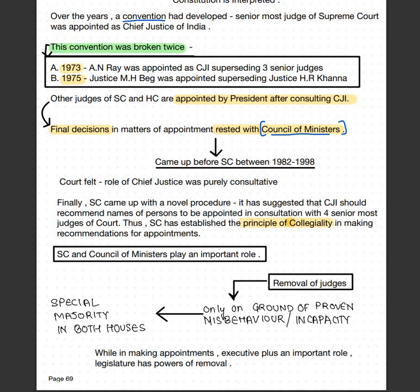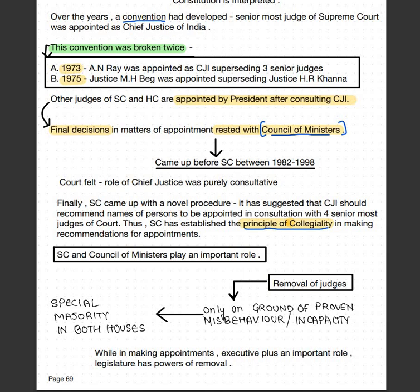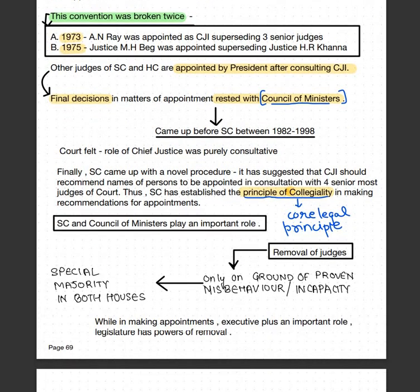The principle of collegiality is the core legal principle underlying the Supreme Court's internal decision-making on appointments. Regarding removal of judges, Supreme Court and High Court judges can be removed only on grounds of incapacity or misbehavior. A special majority in both Lok Sabha and Rajya Sabha is needed to remove judges.